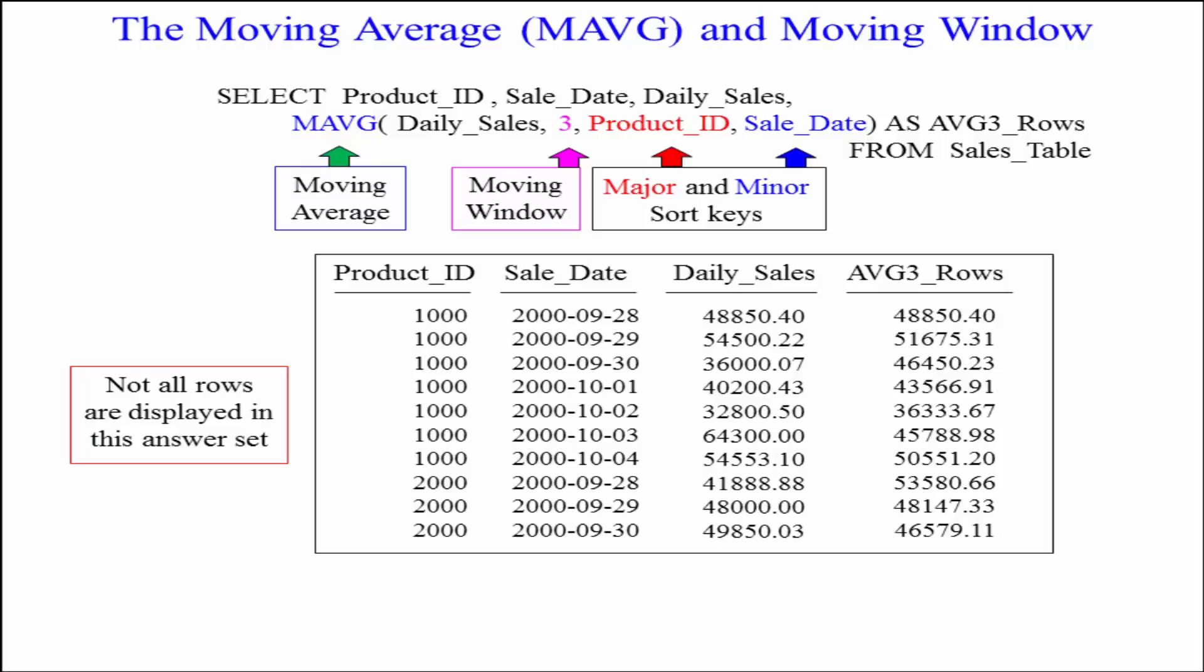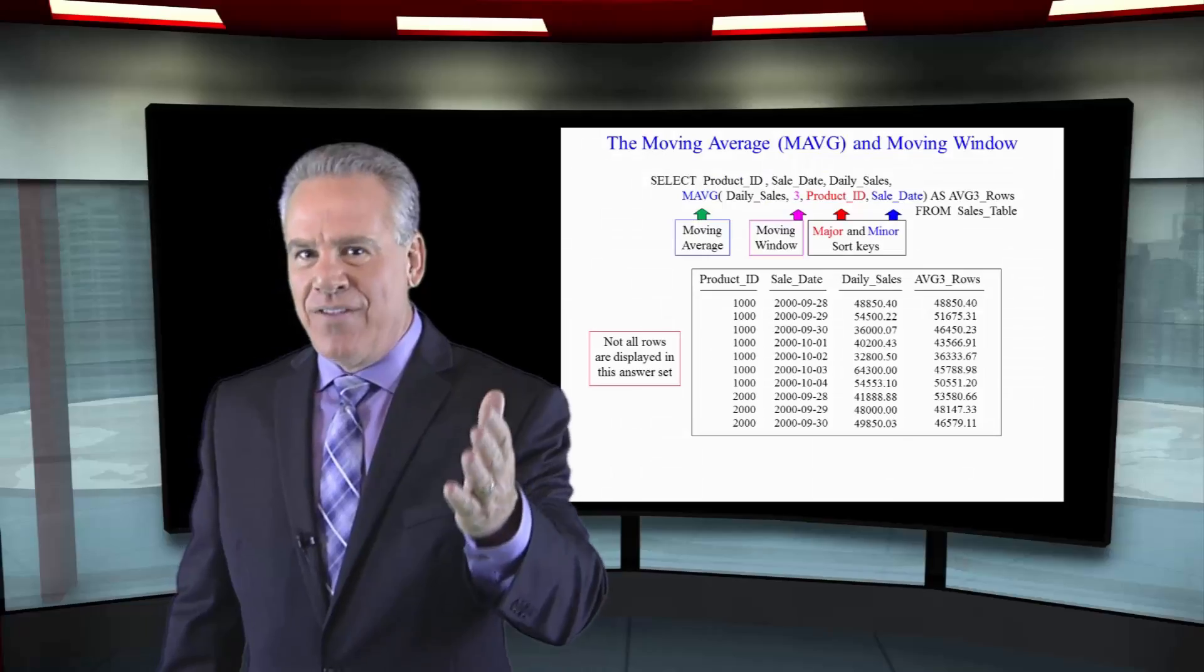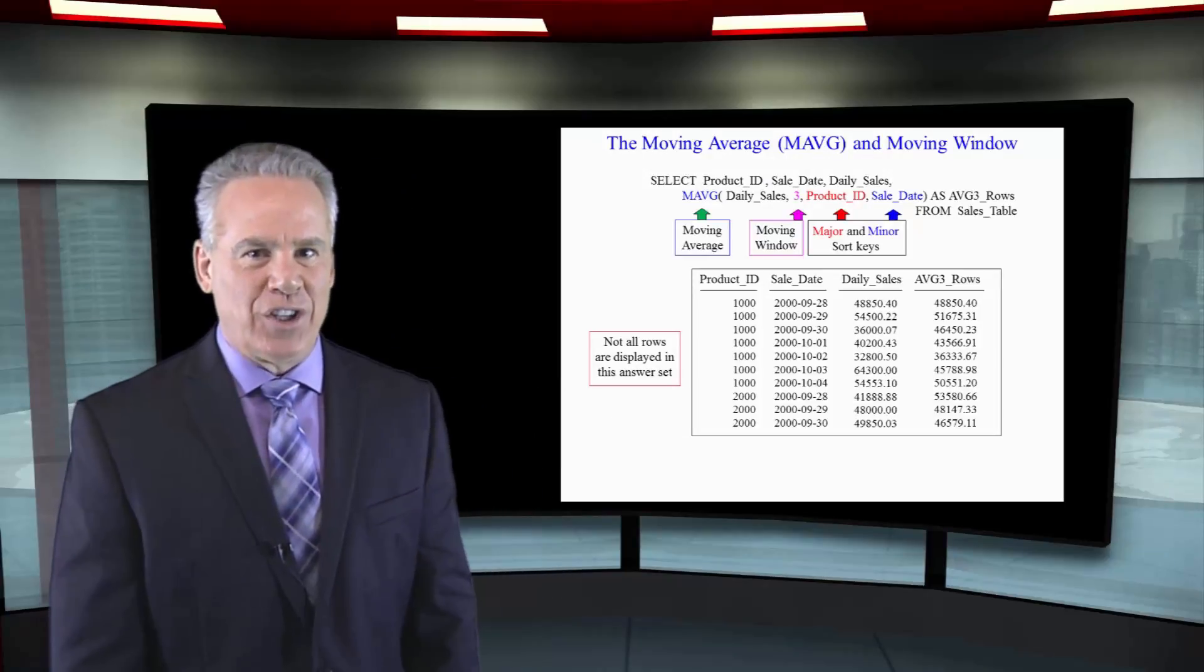Now in the Dow 65 day moving average they're going to have a moving window of 65. We've chosen a moving window of three here but it's the same exact thing and that's what the moving average is going to do.